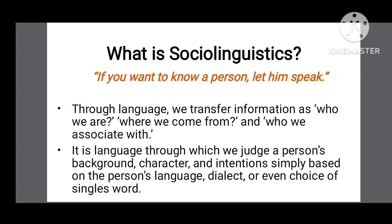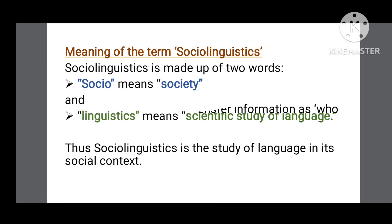It is because of language that we transfer information about who we are, where we come from, and who we associate with. Language is used to judge a person's character, background, and intention simply based on their language, dialect, or even the choice of a single word. So we can say that sociolinguistics is the study of language in society, also known as the sociology of language. The term sociolinguistics is made up of two words: 'socio,' which means society, and 'linguistics,' which means the scientific study of language. Therefore, sociolinguistics is the scientific study of language in its social context.